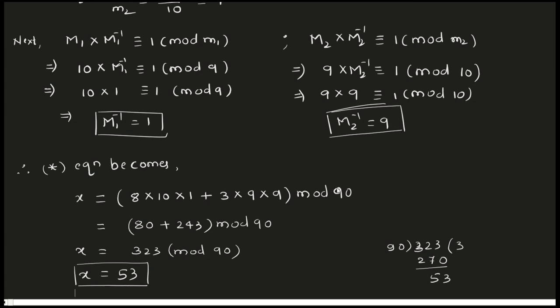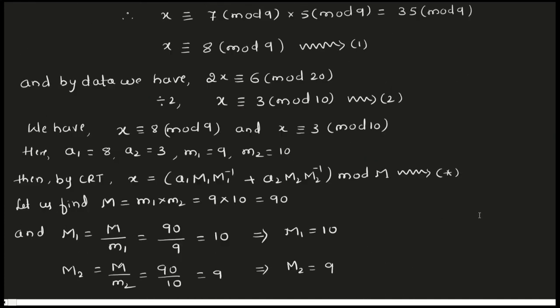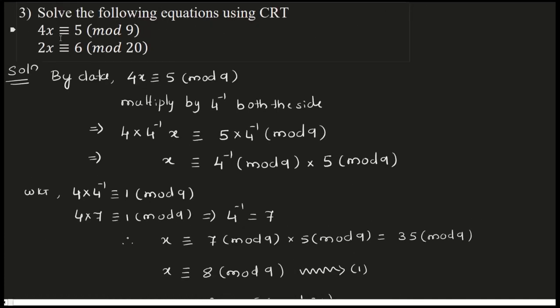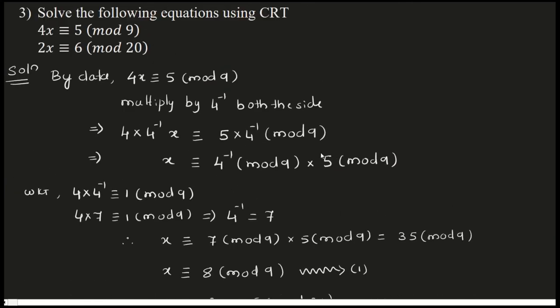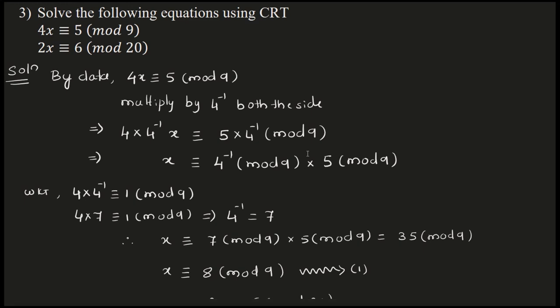As I said, you can cross-verify. The given equations are 4x congruent to 5 mod 9, and 2x congruent to 6 mod 20. Substitute x equals 53 — for example, 4 times 53 divided by 9 — and check that you get the same values. I leave that to you for cross-verification. These are simple examples to apply the Chinese Remainder Theorem.